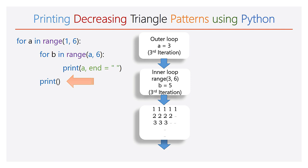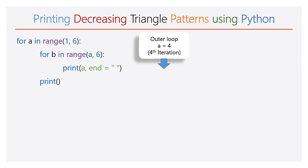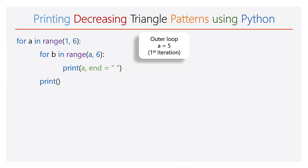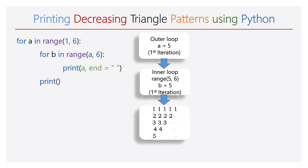The empty print function is executed and the cursor will take the new line. The execution will go to the first line. The value of a is incremented to 4. The range of b is 4 to 6. Now the inner for loop will iterate 2 times. During each iteration, the number 4 will be printed. Hence in the fourth line you have only two 4s. Then empty print function is executed and the cursor will take the new line. Again the execution will go to the first line. Now the value of a will be 5. The range of b is 5 to 6. The inner for loop iterates only one time. Hence in the output you can see only the digit 5 printed in the fifth line. The empty print function will be executed and the cursor will take the new line. This is how you can print the decreasing triangle pattern with any character.